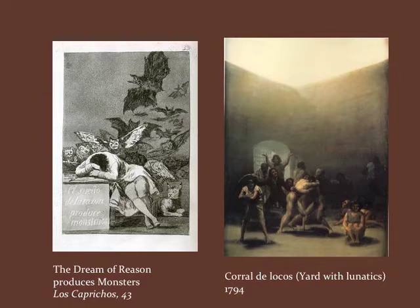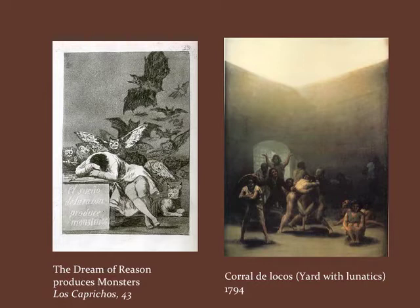We tend to associate the term capricho with the well-known series of etchings Goya published in 1799. However, the artist had first used that term five years earlier in a letter of January 1794, accompanying 11 paintings sent to his colleagues at the Royal Academy of Fine Arts of Saint Ferdinand in Madrid, describing the works as a new departure from commissioned works in which caprice and invention have no limits. This final request suggests that although these painted caprichos were not commissioned, Goya was eager to find buyers.